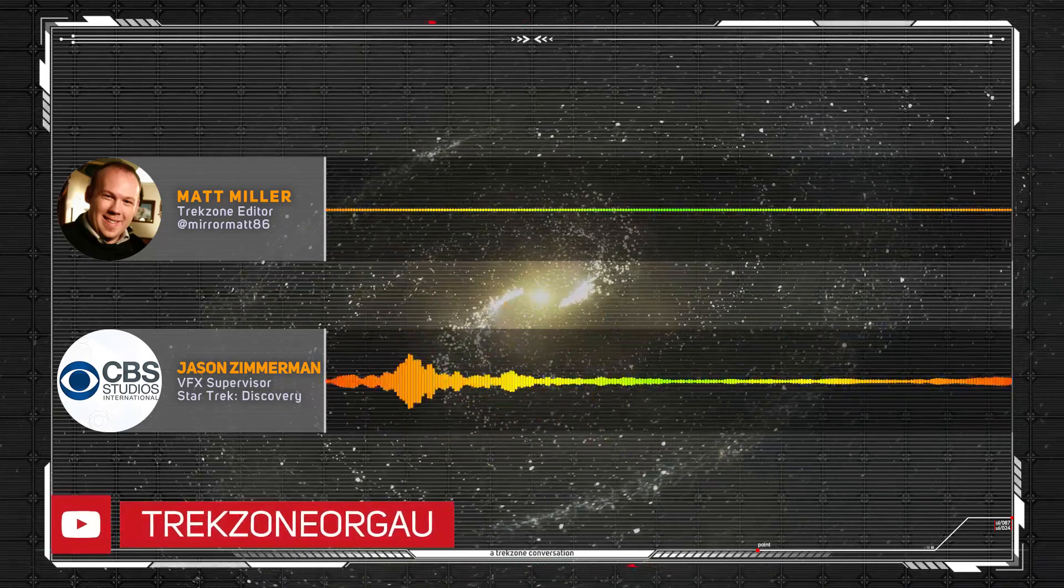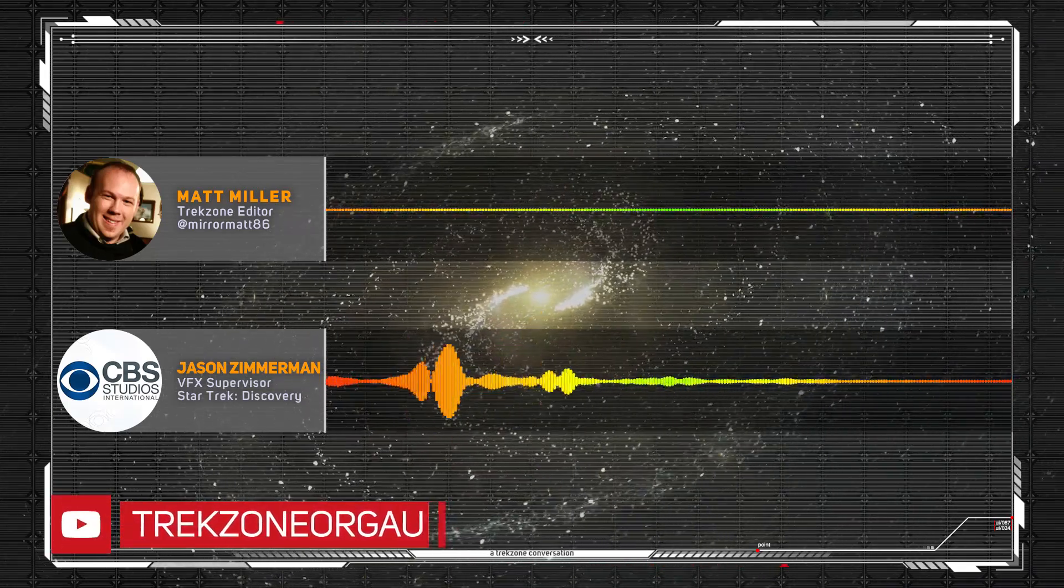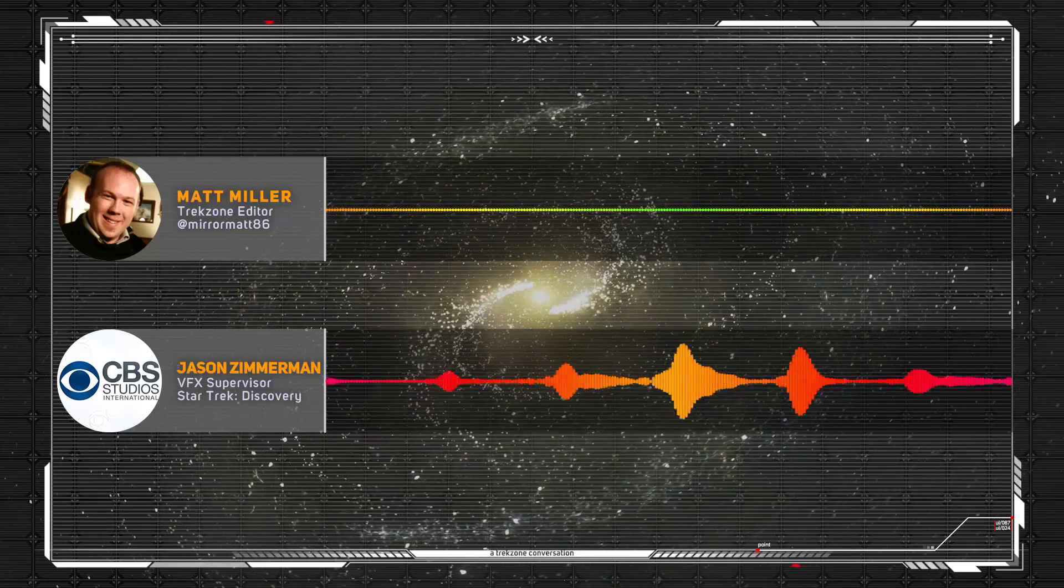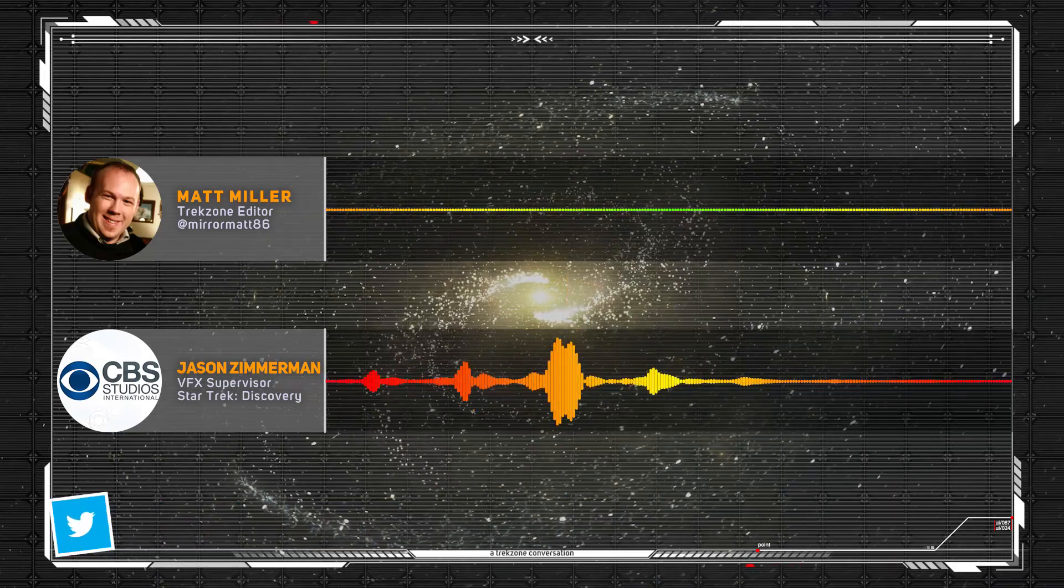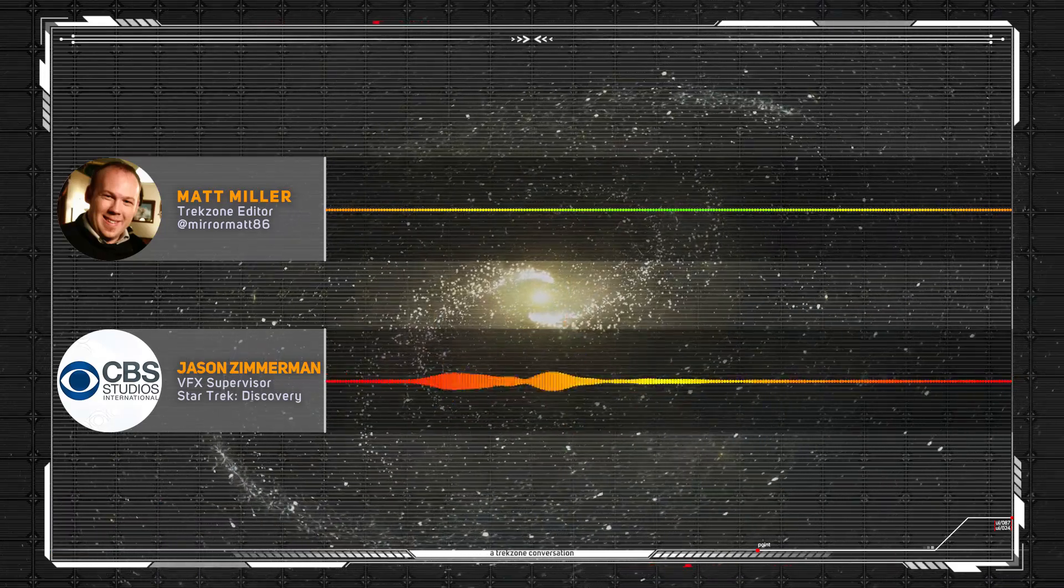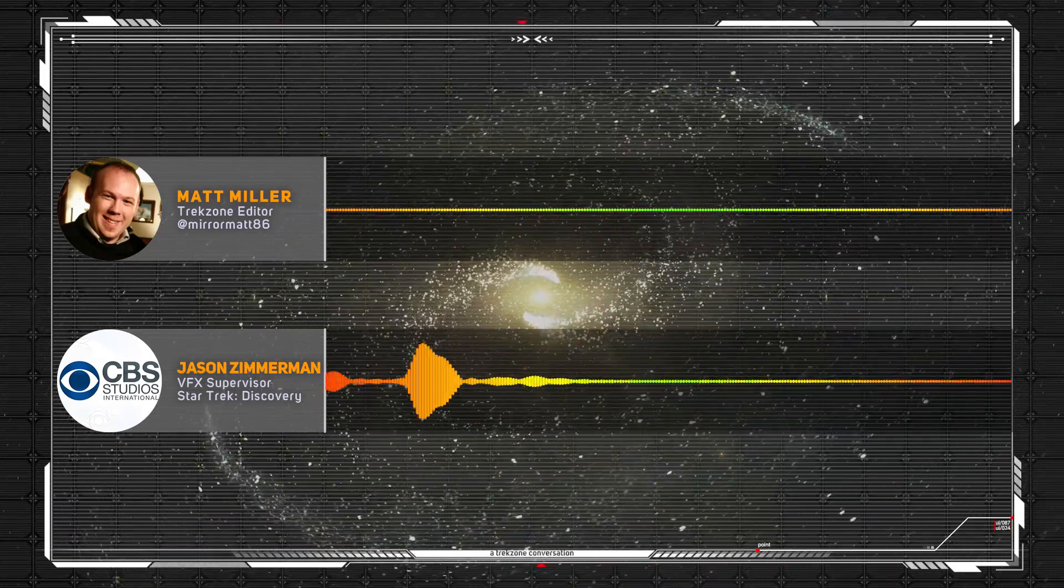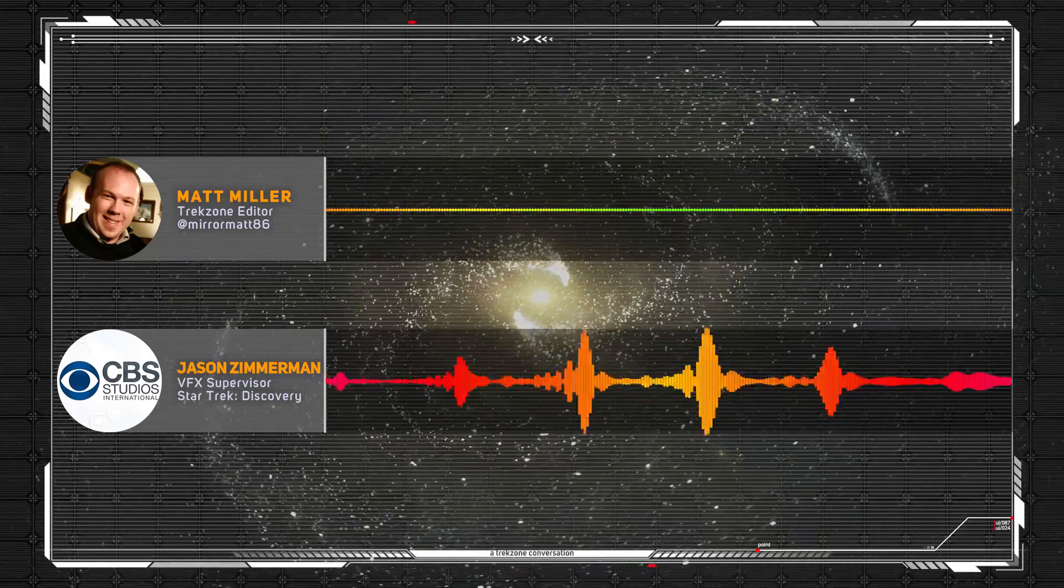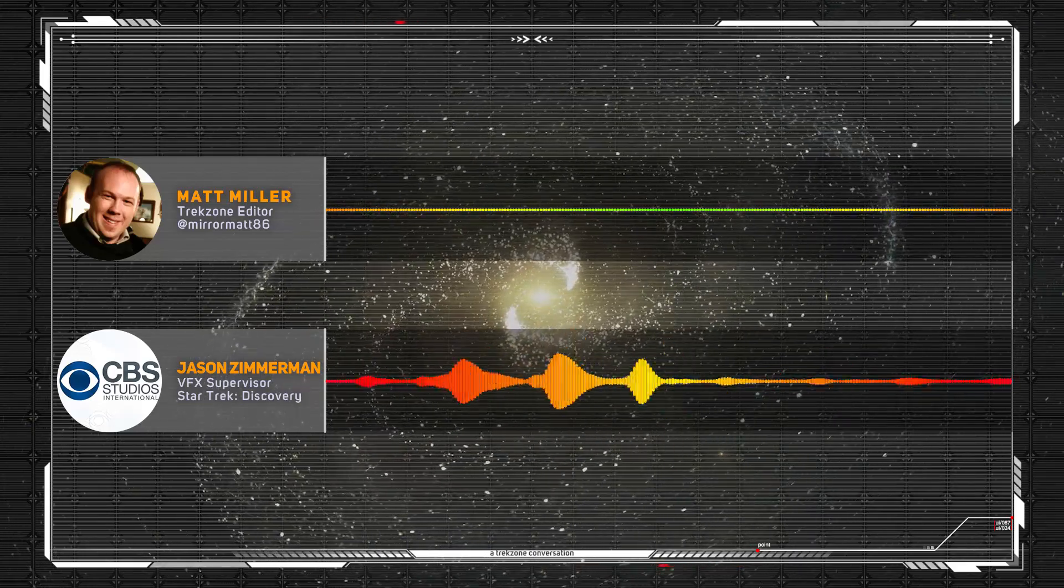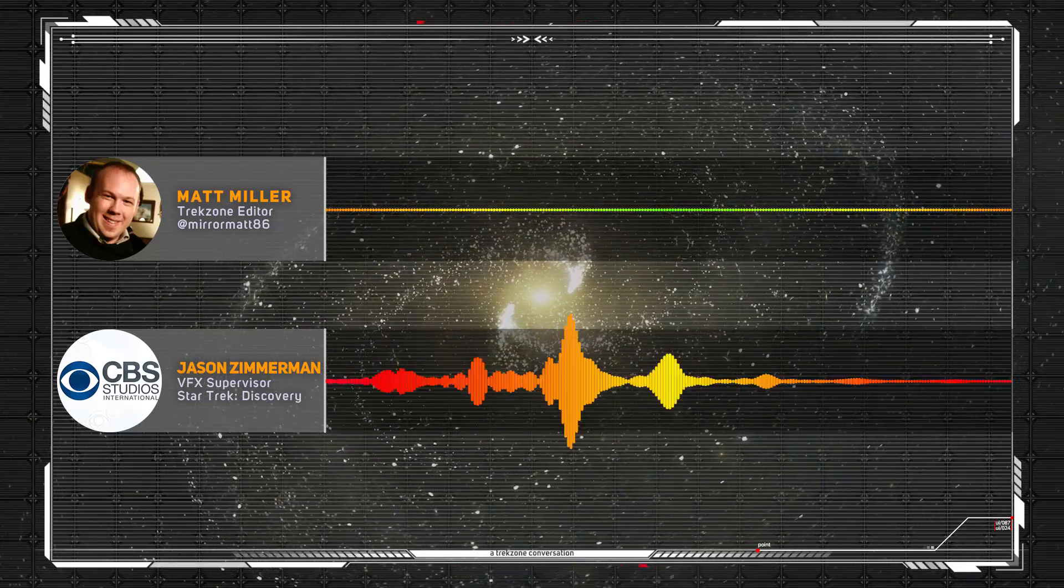We generated first versions of shots in pre-vis, and in some cases we were pretty close, and in some cases they needed to be adjusted once we saw the practical footage. But at least we had something. When we finally shot the footage and got it cut together, we sat down with Alex, we sat down with Olatunde, and we sort of went through everything painstakingly and said, okay, what needs to be adjusted to sort of reflect what was shot?